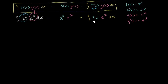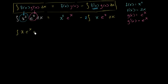We're making progress. This expression is simpler than what we started with — we reduced the degree of x squared down to just 2x. Since 2 is just a scalar constant multiplying the function, we can take it out of the integral sign. So let's pull the 2 out front, and now what we're concerned about is finding the integral of x times e to the x dx.